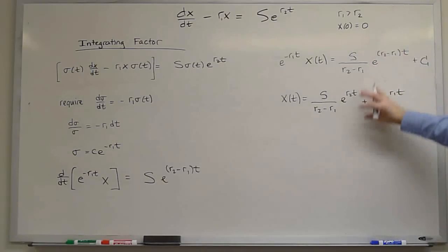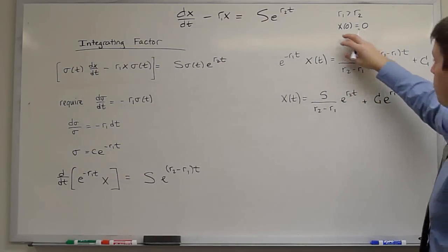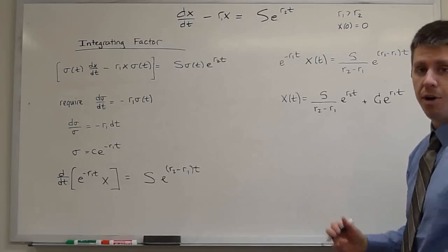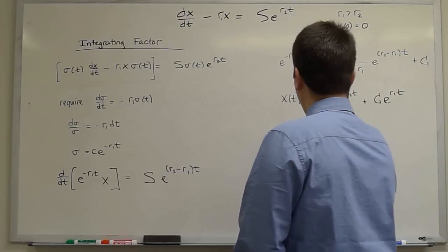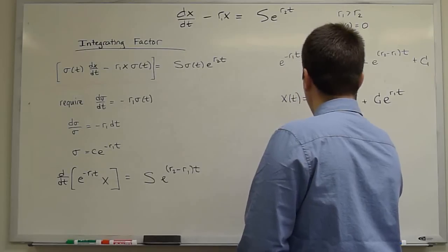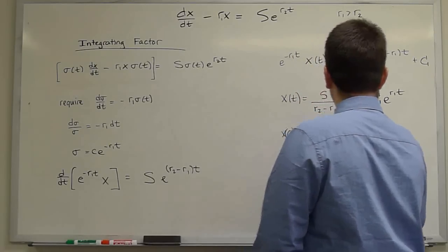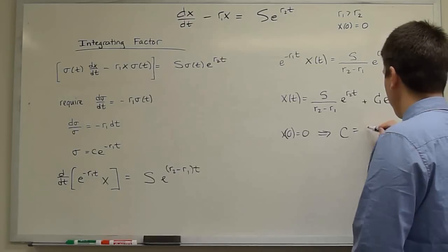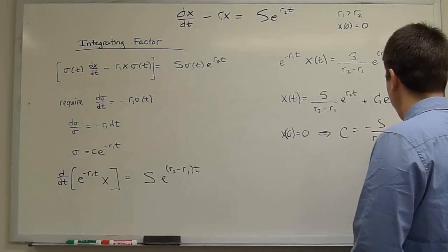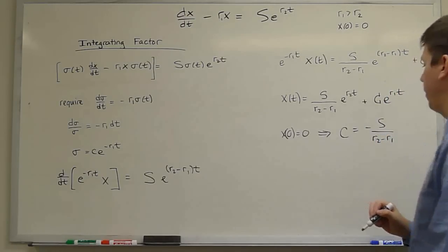We have the same solution we had last time, the general solution. We have the same initial condition, and so when we satisfy the initial condition, x of 0 equals 0 implies that c is negative s over r2 minus r1 as we saw in the last video.